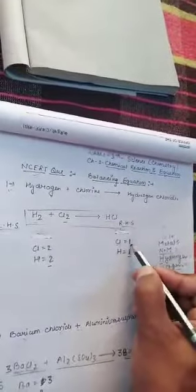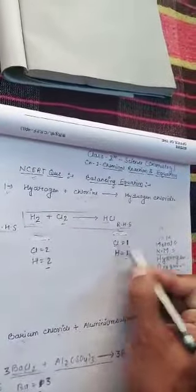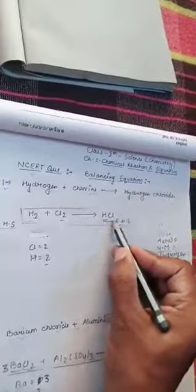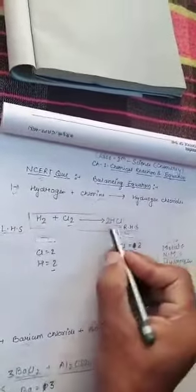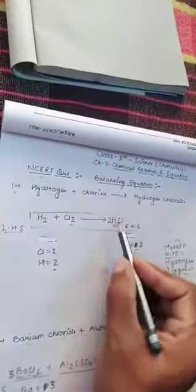Chlorine is 2 here, chlorine is 1 here, so we will multiply this chlorine by 2. But this chlorine is present in the form of HCl, so we will multiply the whole compound by 2. Now the number of chlorine is 2, but hydrogen also increases. Now the hydrogen number is 2 here.